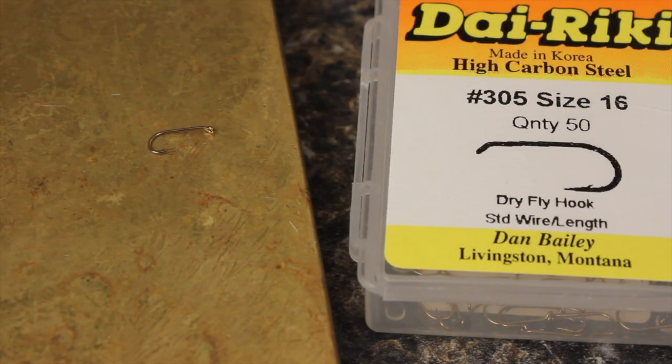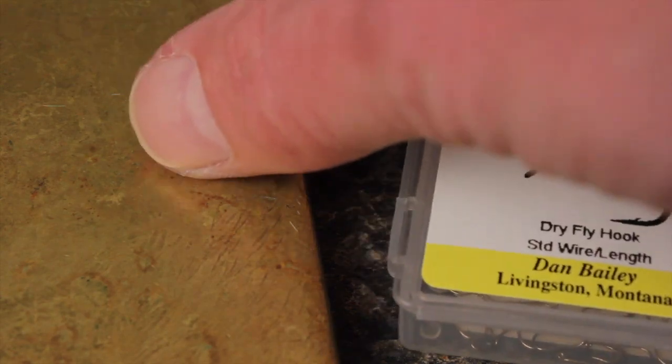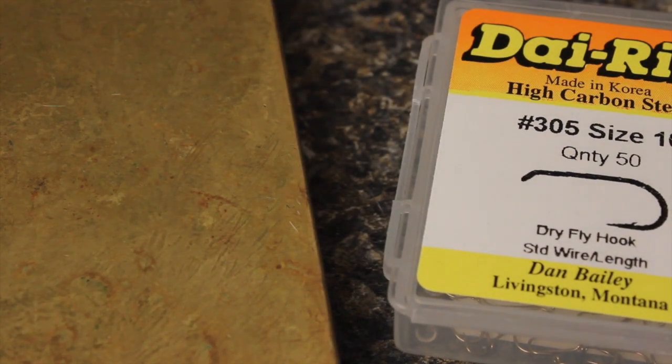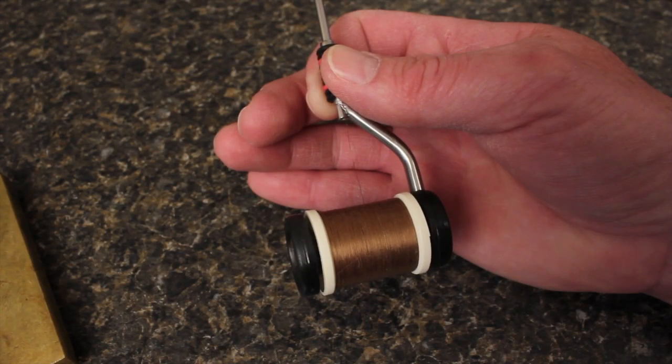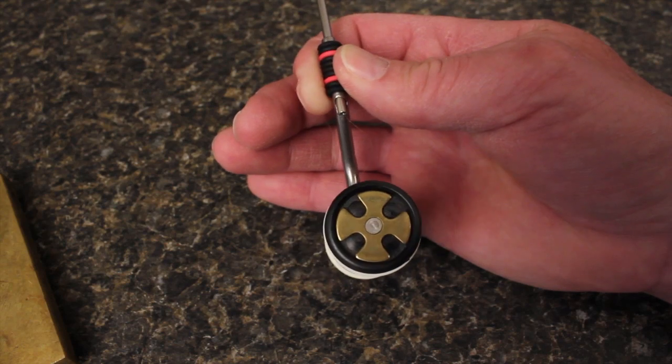For a hook, Matt's going to use a Dairiki No. 305 in size 16. For thread, Olive 6-0 Danville.